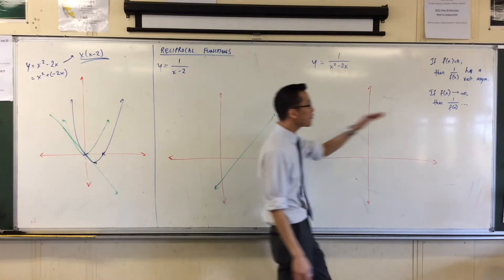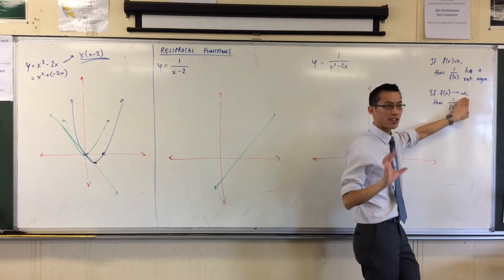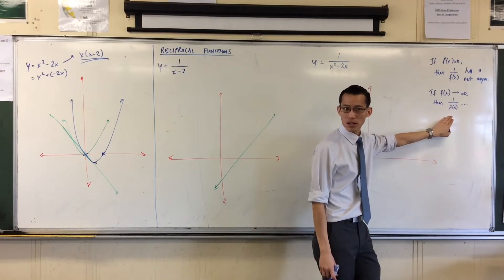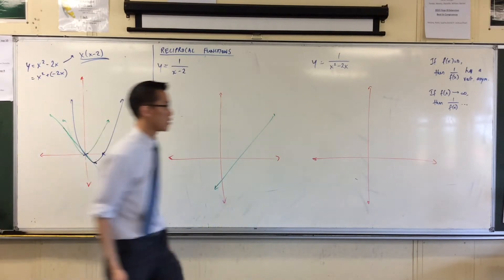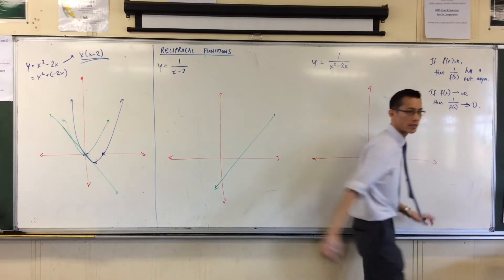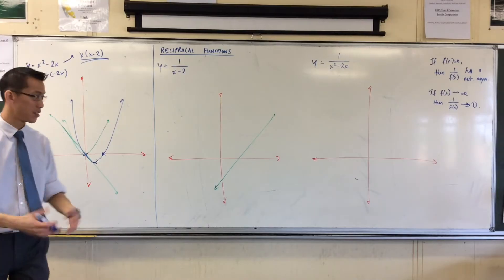Then, correspondingly, if my function is growing, if it's racing off with no limit in size, it's going to infinity, then what happens to the reciprocal? Well, it's on the denominator, that thing that's going to infinity, so therefore it's going to approach zero. So let's be a bit sneaky. Now, you have to be careful. I might approach it from above or below. That will depend on the sign of the whole thing.